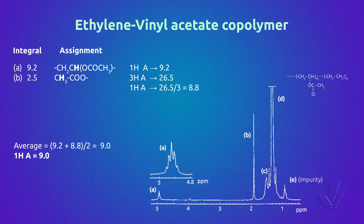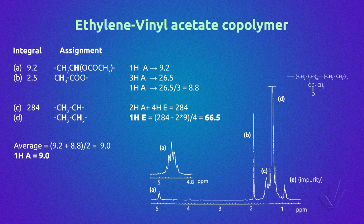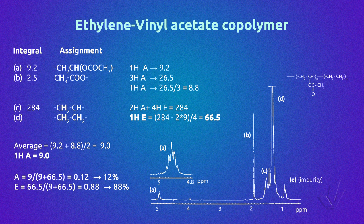In this case, the integral of one proton of the acetate unit was found to be 9. To calculate the amount of ethylene unit, we can use the sum of signals C and D together because they are not easy to separate without error. The big signal is due to 2 protons from the vinyl acetate unit and 4 protons from the ethylene unit. So we discount 2 protons from unit A from the total integral of 284, and divide the result by 4 to obtain the integral of 1 proton of the ethylene unit. Calculating the molar fractions and percentages, this copolymer is formed by 12% vinyl acetate and 88% ethylene.